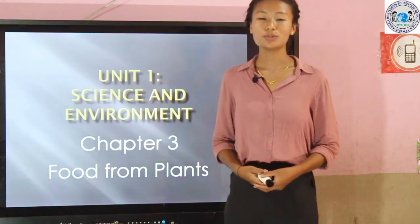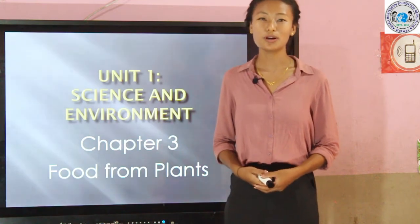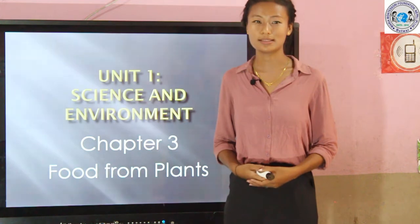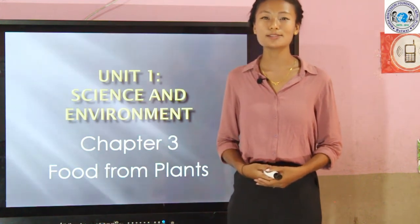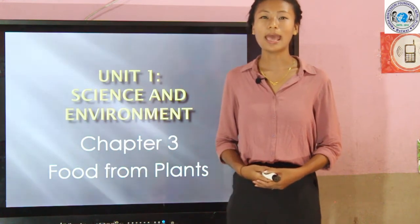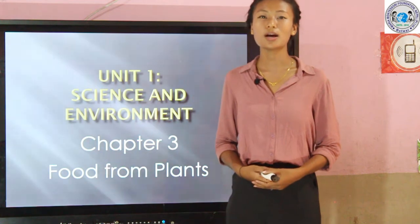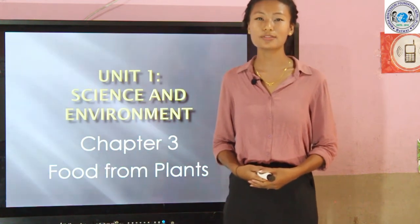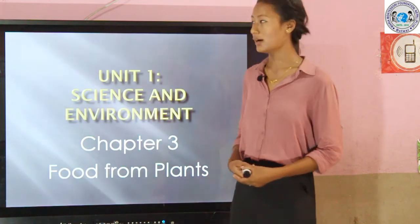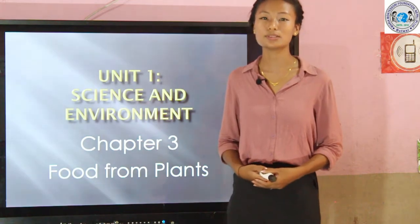In Chapter 2, we learned about A Green World. In A Green World, we learned about plants. There are two types of plants: big plants and small plants. In big plants, we studied about trees. In small plants, we studied about shrubs, herbs, climbers, and creepers. We also studied about parts of plants.